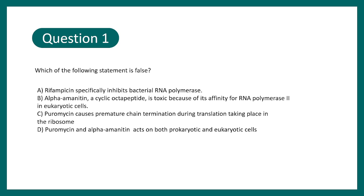Question number one says, which of the following statement is false? There are four statements. We have to understand which one is false. Rifampicin specifically inhibits bacterial RNA polymerase. Alpha-amanitin, a cyclic octapeptide is toxic because of its affinity for RNA polymerase 2 in eukaryotic cell. Puromycin causes premature chain termination during translation taking place in the ribosome. Puromycin and alpha-amanitin acts on both prokaryotes and eukaryotic cells.